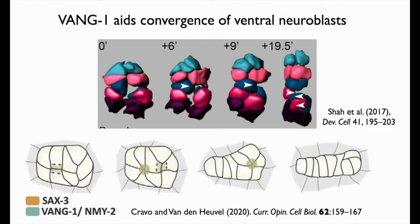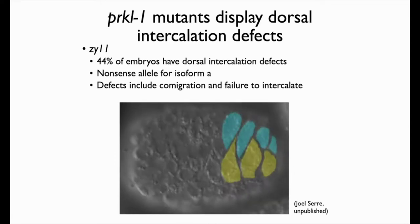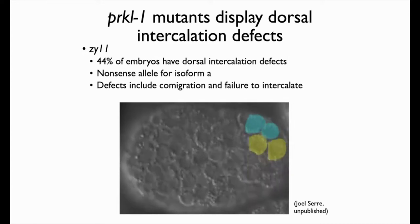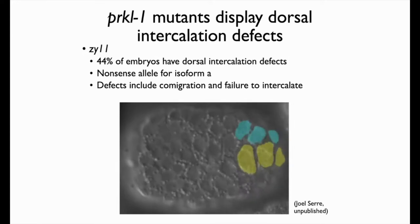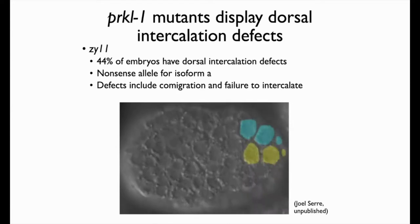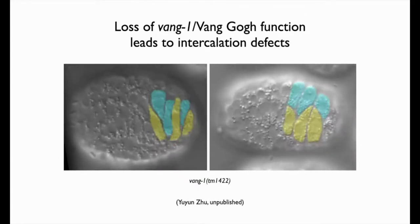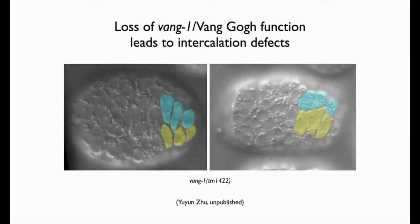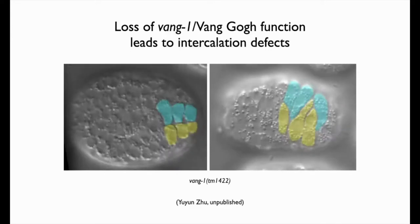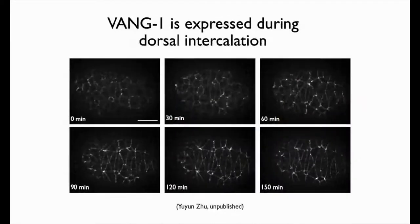We decided to look at PRICKLE-1 and VANG-1. Joel Sear looked at PRICKLE-1 mutants and found a highly penetrant dorsal intercalation defect — one yellow cell in the movie actually fails to intercalate completely and gets pushed off the bottom. VANG-1 mutants, worked on by Yun Zhu, give contralateral fighting, medial delay, and ipsilateral co-migration — intercalation defects similar to what we've seen before.